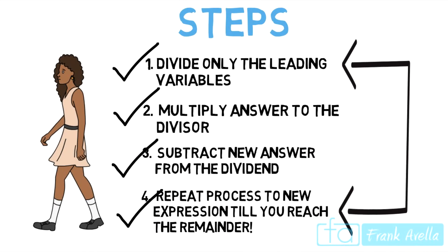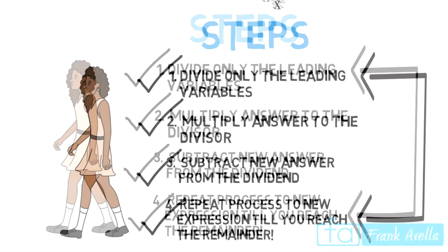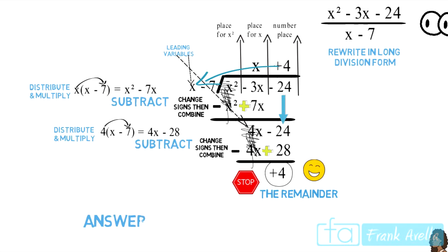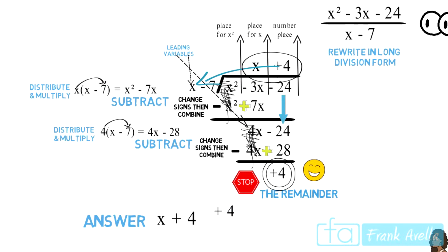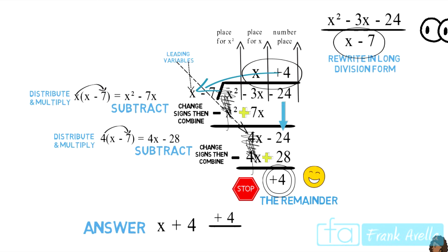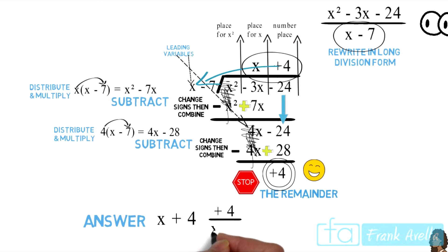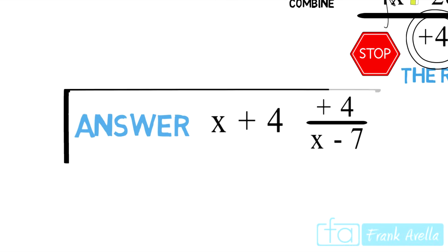Now how do we write the final answer? We take what we have on top of the division bar, which is x plus 4, and keep that. We also take the remainder, which is positive 4, and because it's a remainder it gets placed over the original denominator, x minus 7. Our final answer is x plus 4 plus 4 over x minus 7.